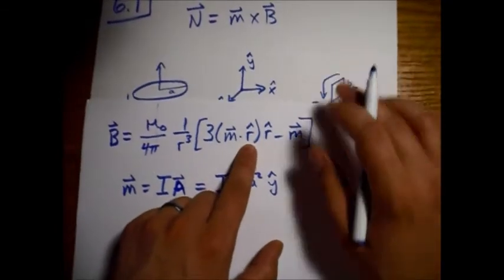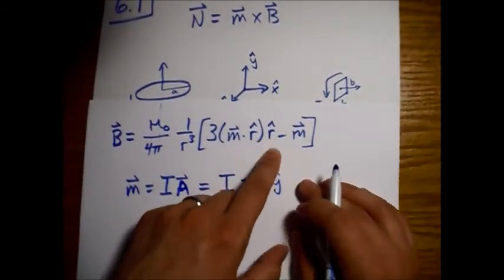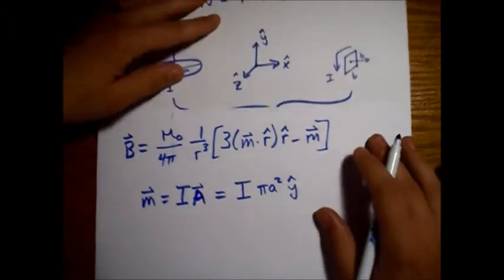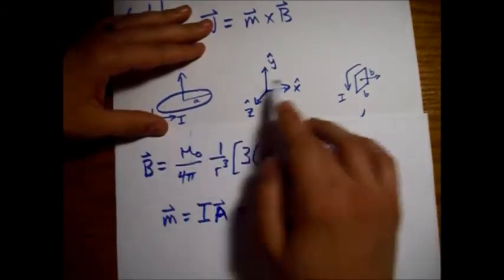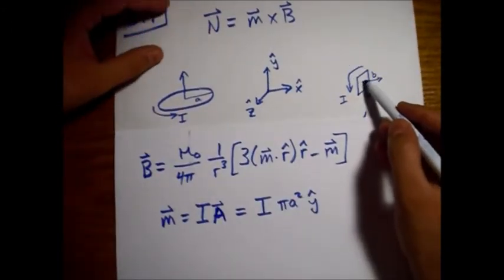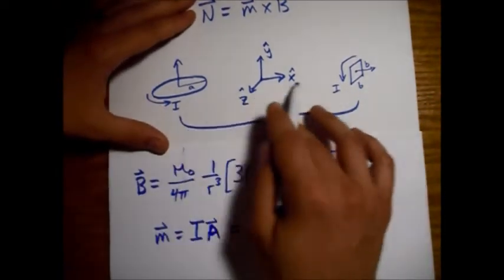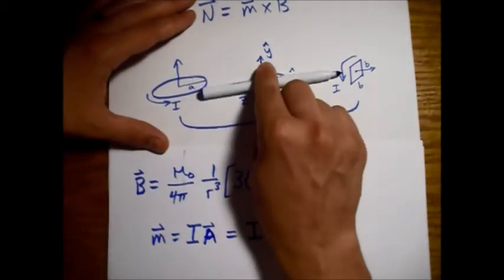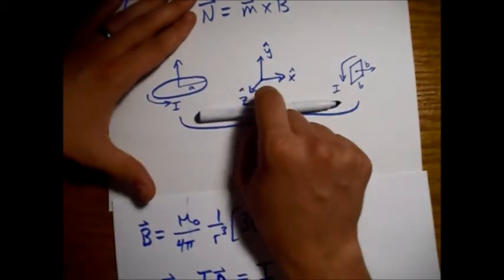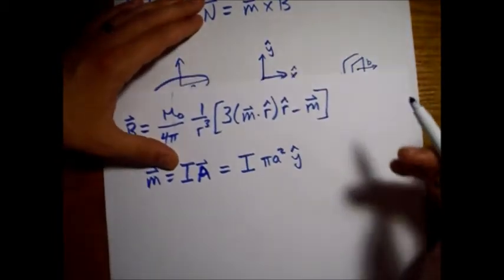And then looking at this R hat, that's the unit vector pointing out to this source here. So that's just going to be X hat, just the unit vector pointing in the same direction.